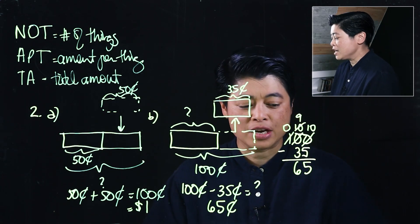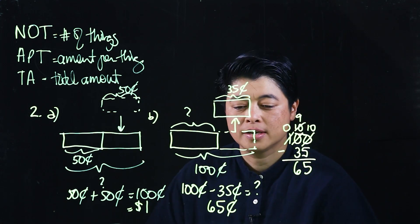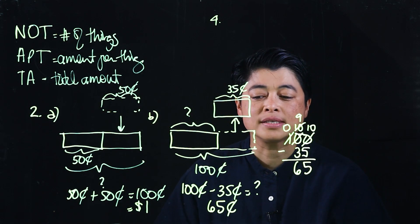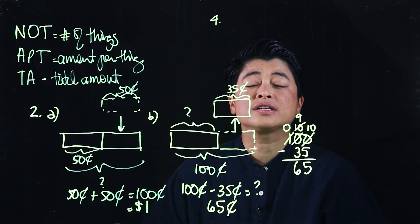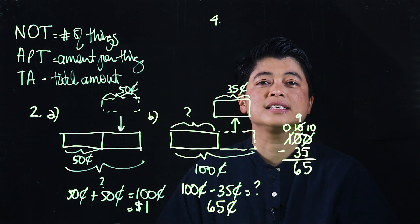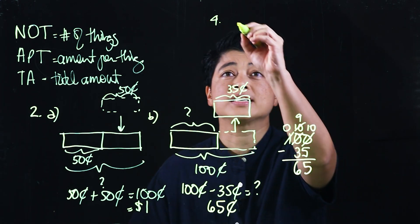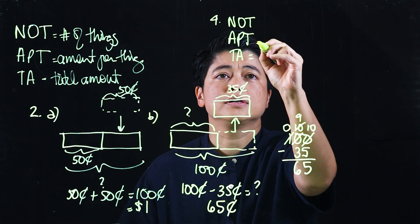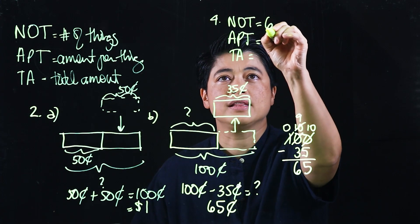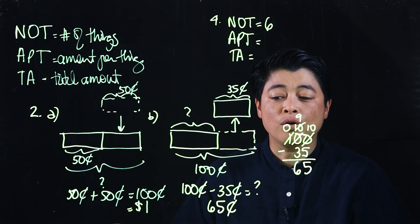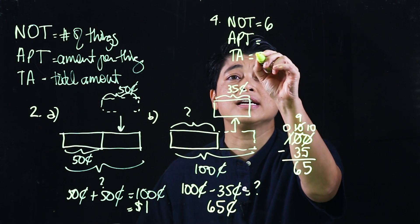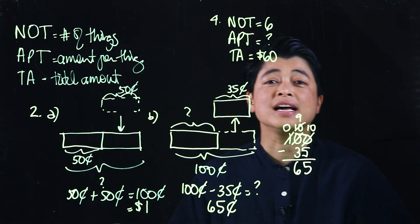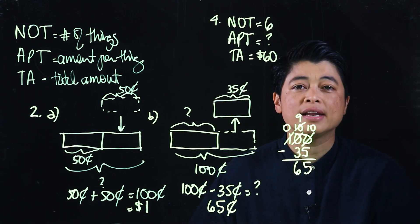Now moving to page 42, problem number four: six movie tickets cost 60 dollars — how much does each ticket cost? Our setup is number of things, amount per thing, and total amount. There are six tickets as the number of things, and 60 dollars is the total. The question asks how much each ticket costs. From previous lessons, 'each' and 'per' mean the same thing.